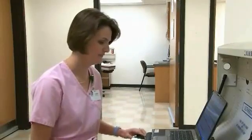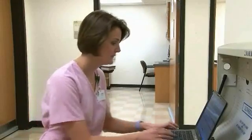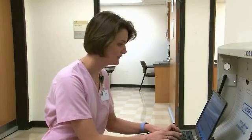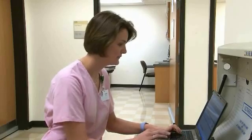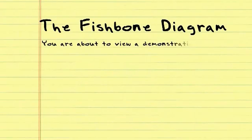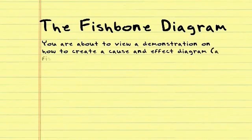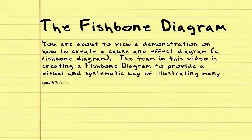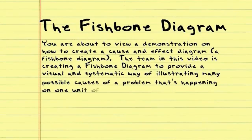This is a vexing problem that can face caregivers and patients alike. It requires intervention. A method to solve this problem is to use a fishbone analysis. You are about to view a demonstration on how to create a cause and effect diagram — a fishbone diagram. The team in this video is creating a fishbone diagram to provide a visual and systematic way of illustrating many possible causes of a problem happening on one unit of a busy urban hospital.